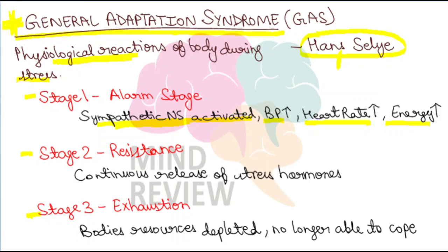Us waqt aapka digestion nahi hota properly, salivation stop ho jaata hai, toh aapko throat bhi dry lagne lagta hai in a stressful situation. So alarm stage is this — that you are first facing that stress, so aapki body sympathetic nervous system ko activate karke tries to alert you ki kuch toh stressful ho raha hai. Phir stage 2 aayegi — stage 2 hai aapki resistance ki stage.